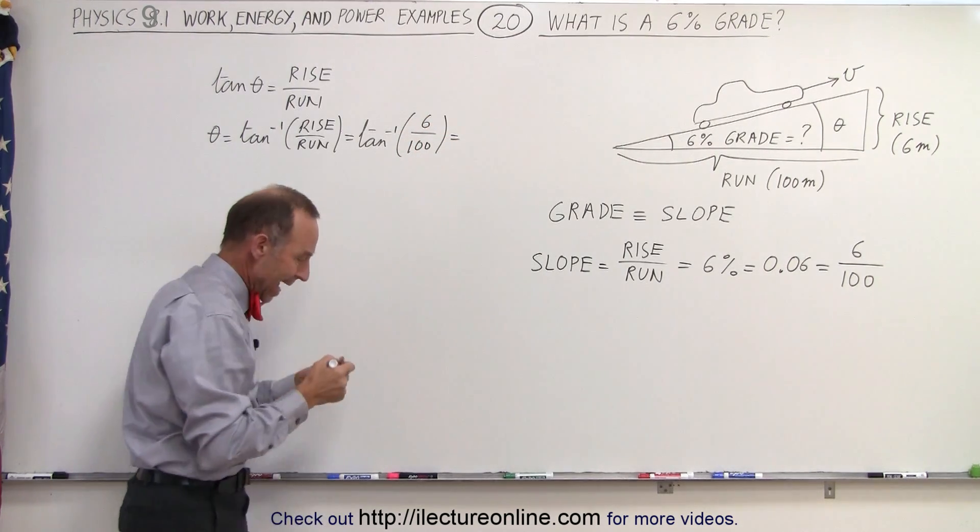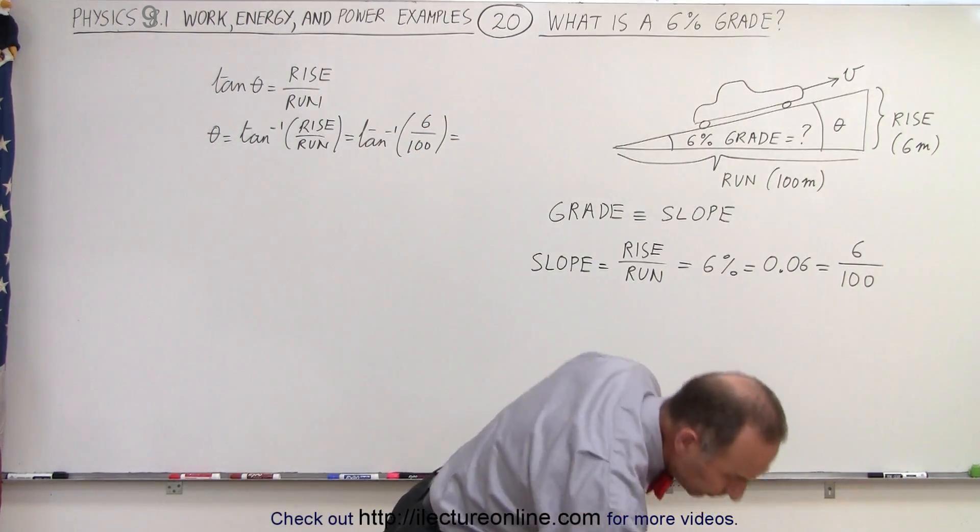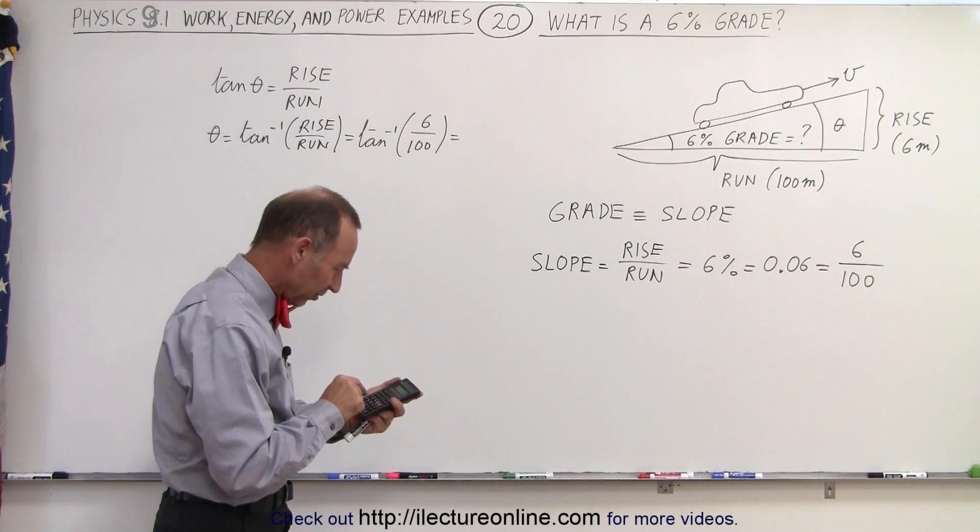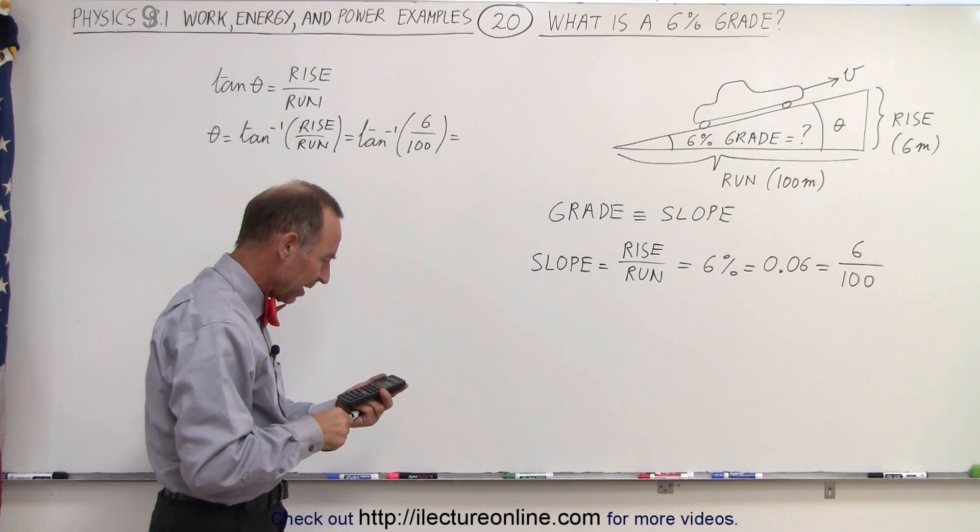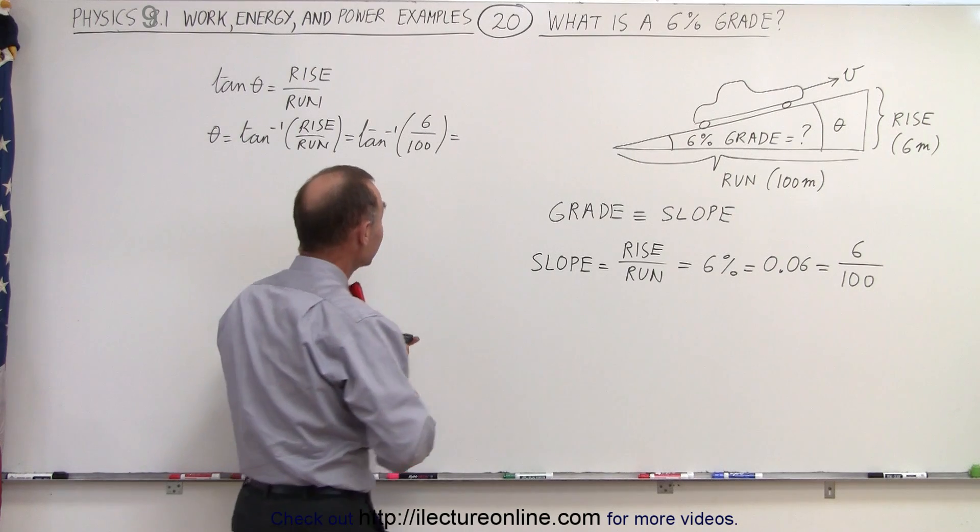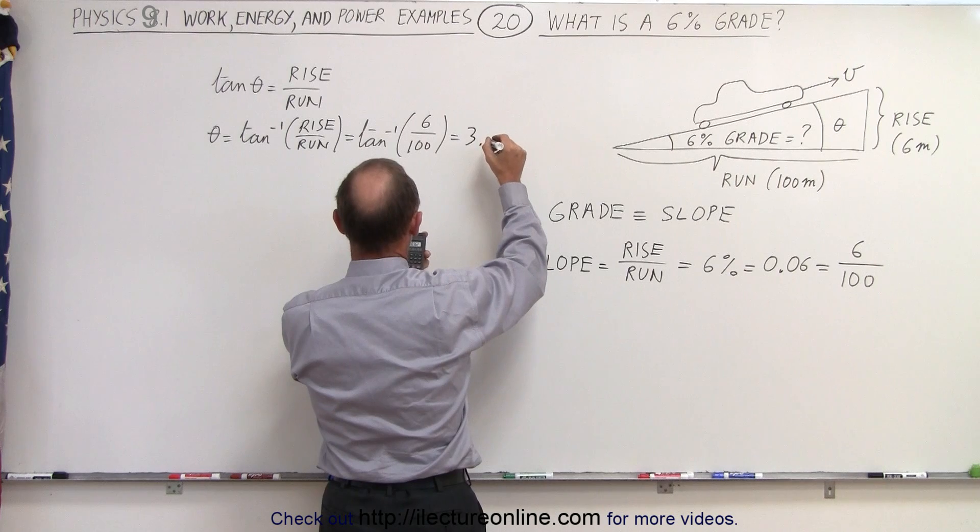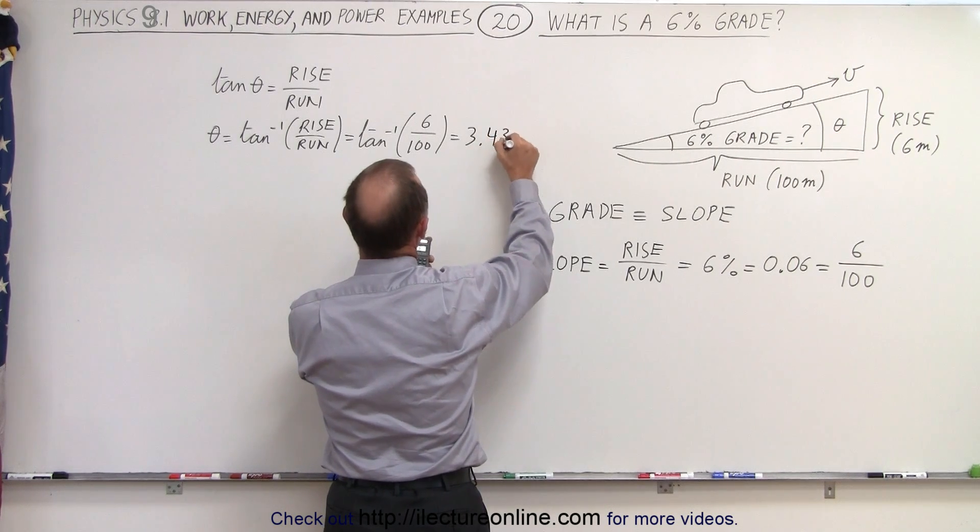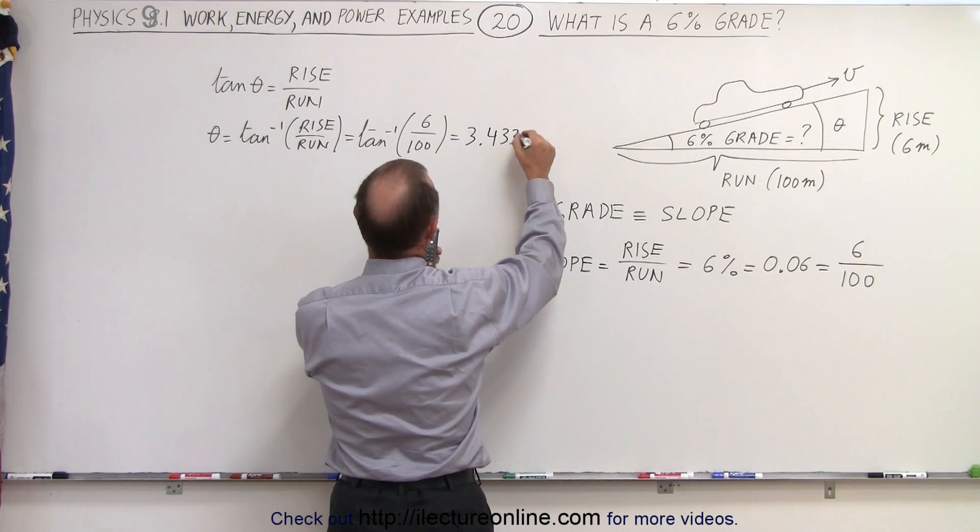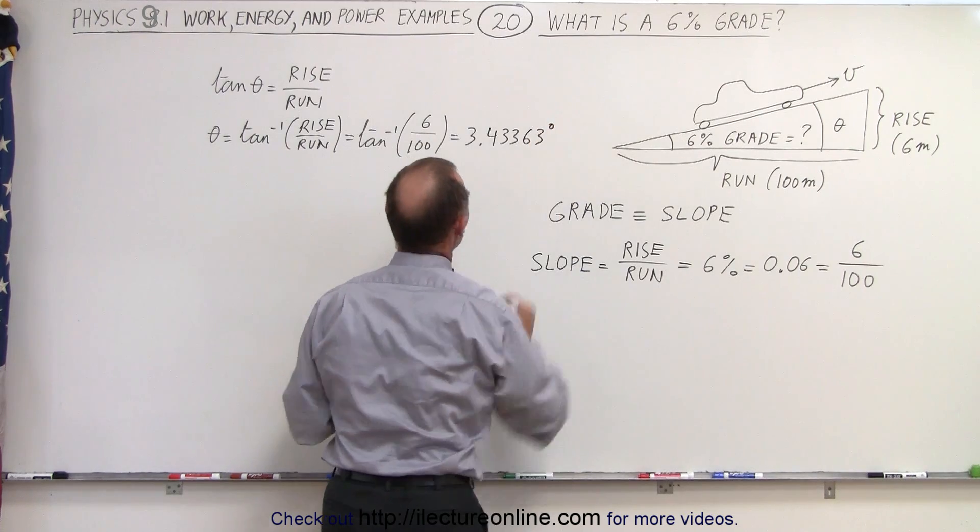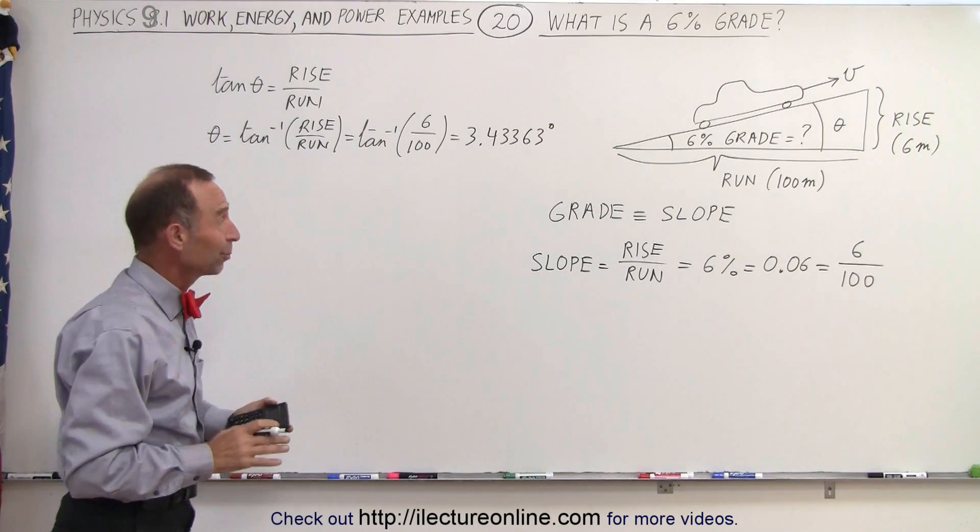So 0.06, take the inverse tangent of that, that gives us an angle of, let's make sure we keep enough decimal places, 3.4363 degrees. I think that's enough decimal places.